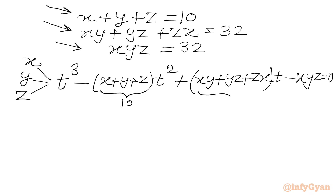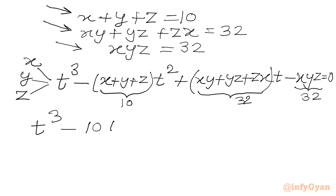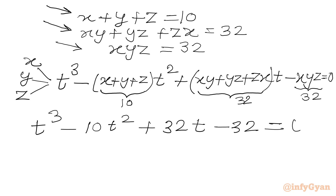Now applying x plus y plus z equal to 10 and xy plus yz plus zx equal to 32, we get the cubic: t cubed minus 10t squared plus 32t minus 32 equal to 0.